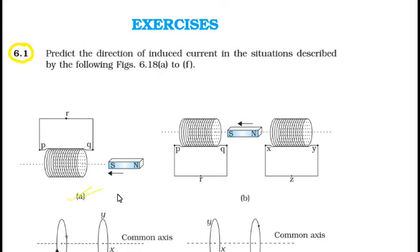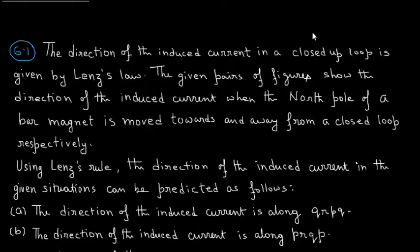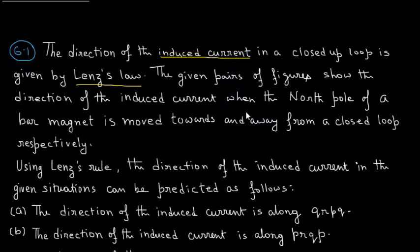Case A. We have to find the direction of the induced EMF or induced current. We know that the direction of the induced current in a closed loop is given by Lenz's law. The given pairs of figures show the direction of the induced current when the north pole of a bar magnet is moved towards or away from a closed loop respectively.